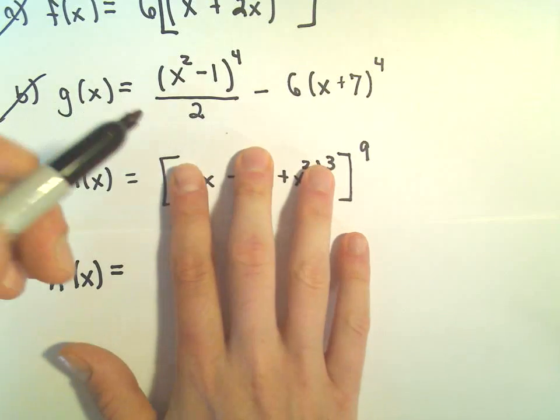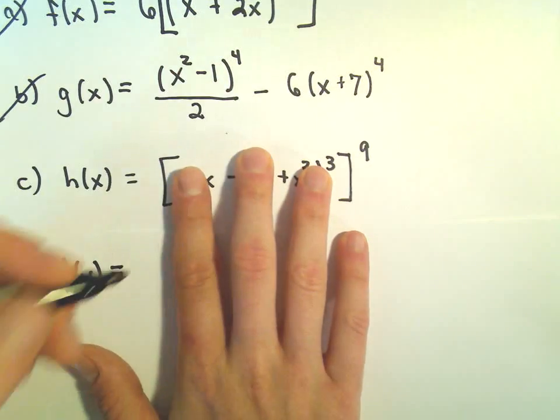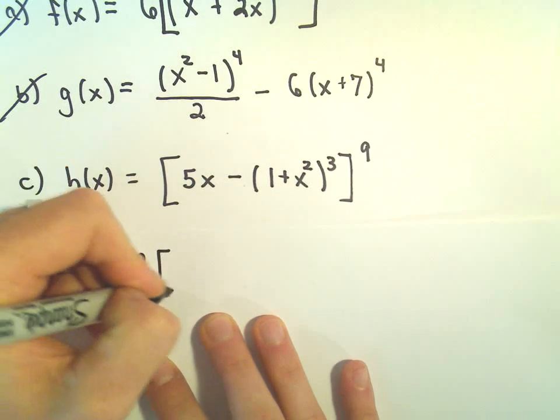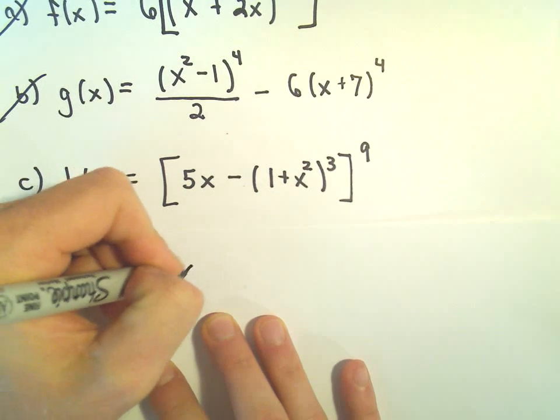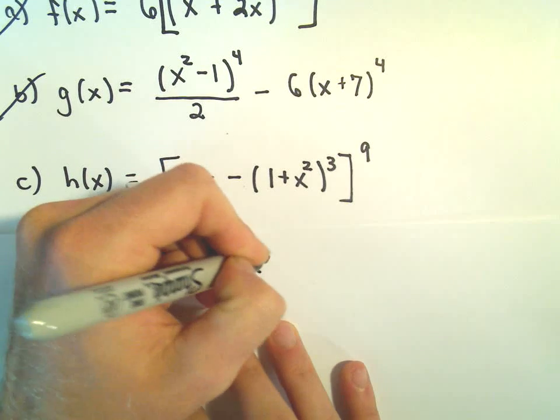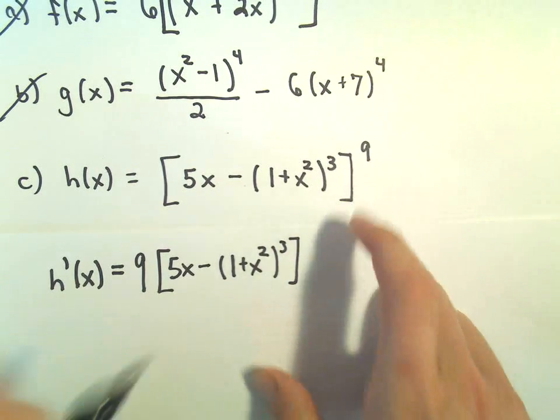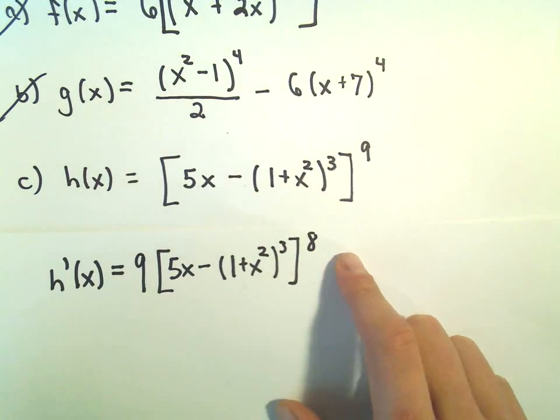If I have x to the 9th power, I would get 9x to the 8th power. So I'm going to get 9, but here we leave the inside alone, so 5x minus 1 plus x squared cubed. And then we take 1 away from the exponent, so that'll give us to the power of 8.